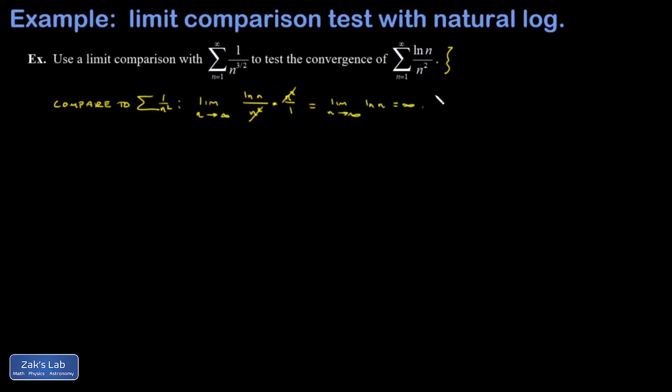So what this means is the terms of our series are larger than those of a known convergent series, which tells us nothing. So that's an inconclusive limit comparison.